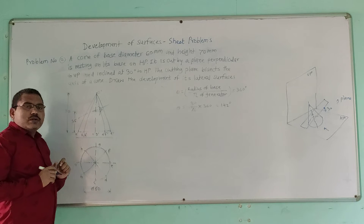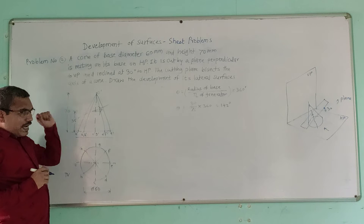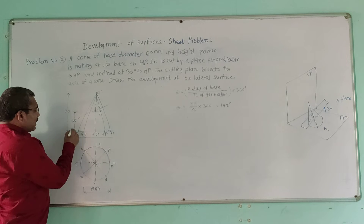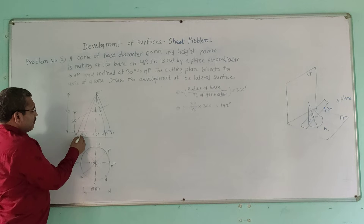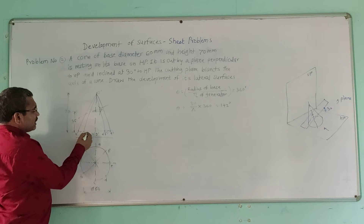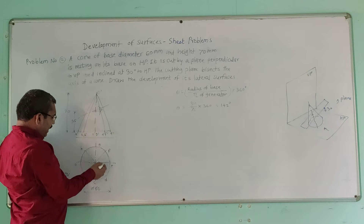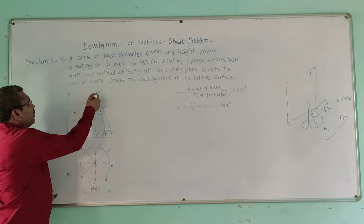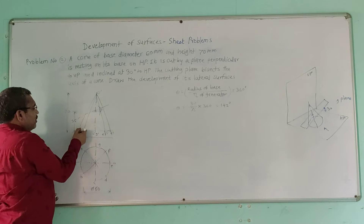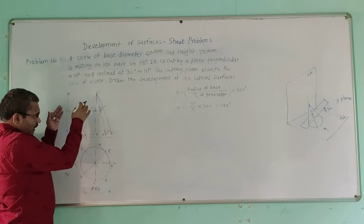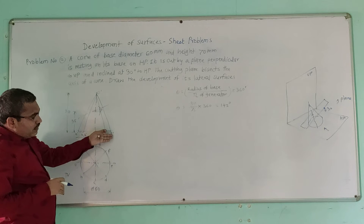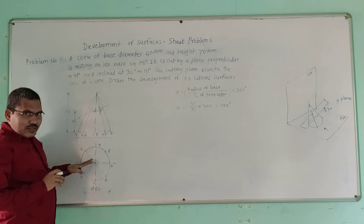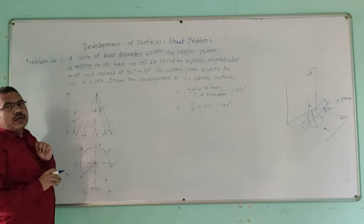Draw projections to complete the different views. The front view of this cone is a triangle. Project points A, B, H, C, G, D, F, and E from the top view onto the base of the front view triangle as A', B', H', C', G', D', F', and E'. Then join the apex point with all points on the base — these lines OA, OE, O'A', O'E', etc. are called the generators of the cone. You will have 8 generators in both top and front views.